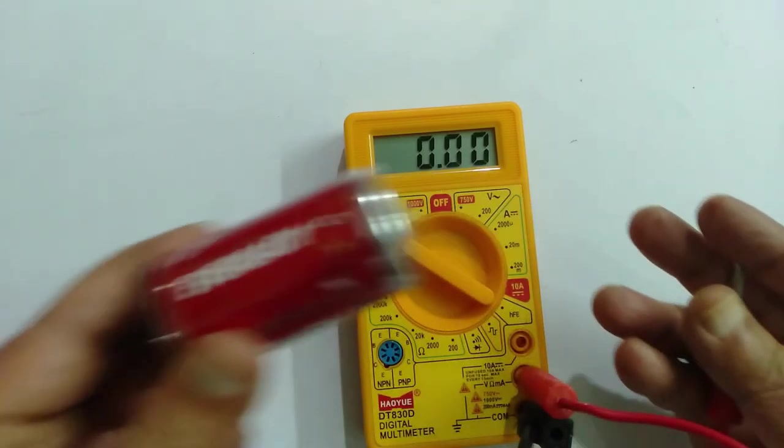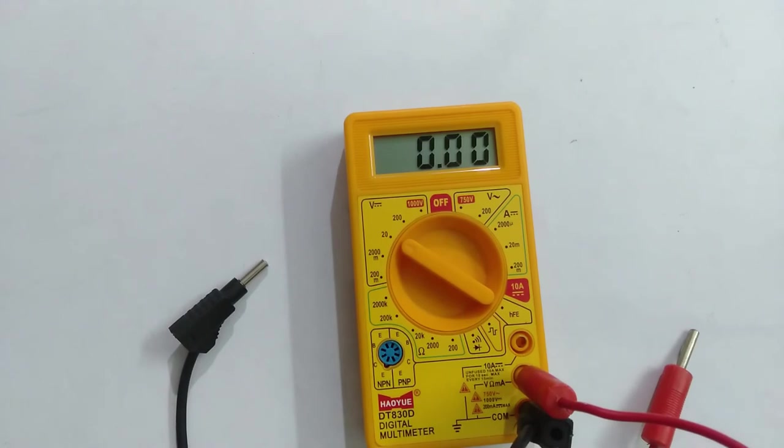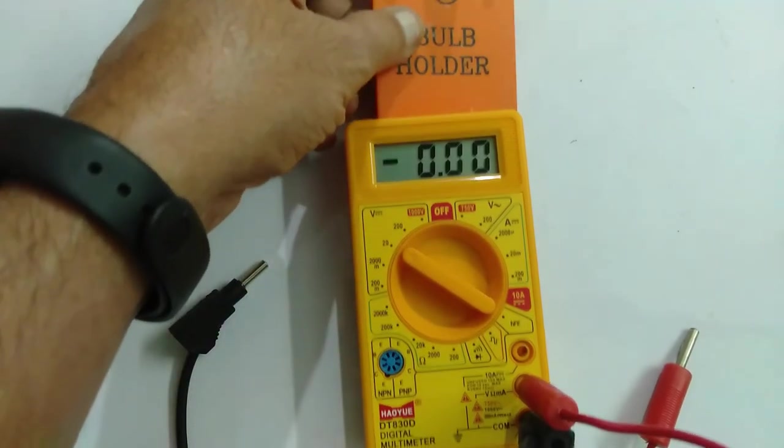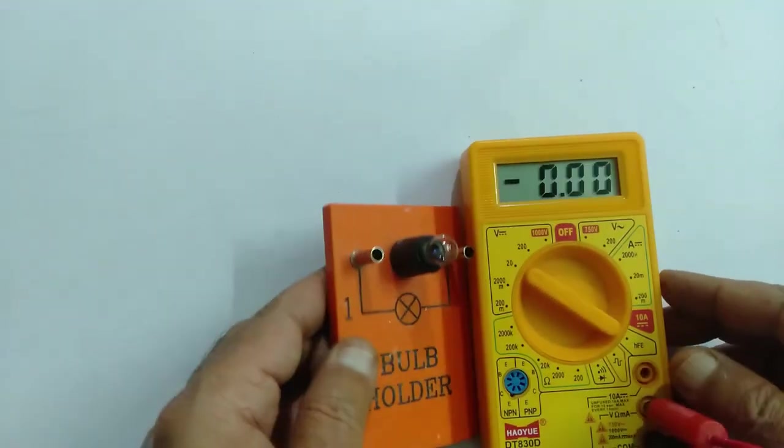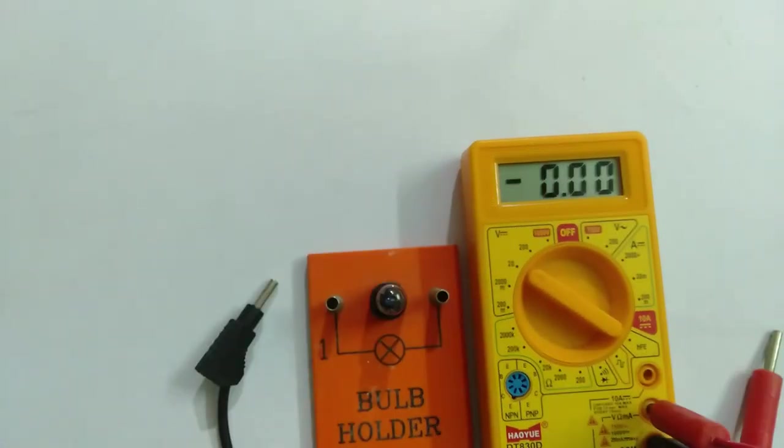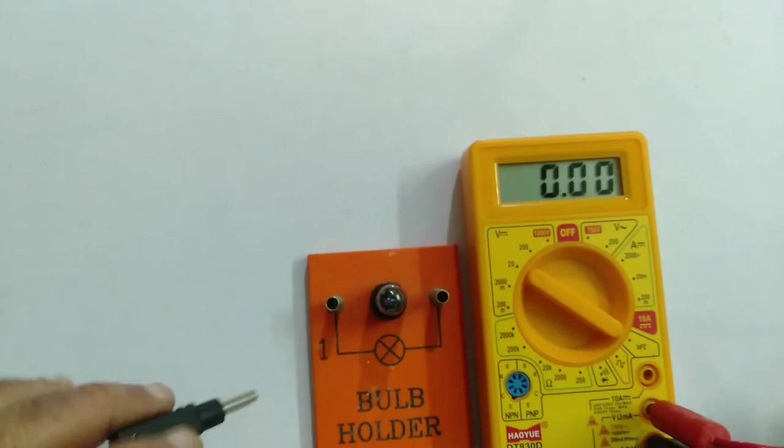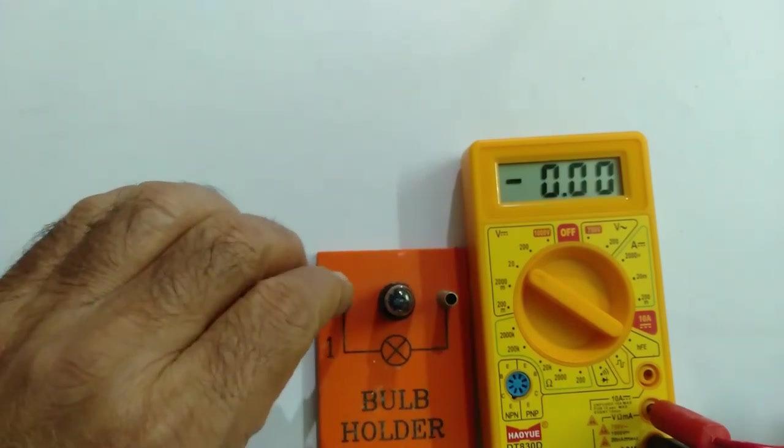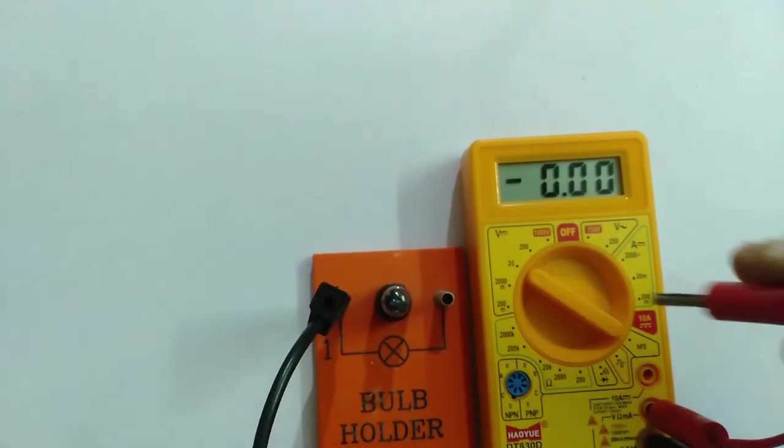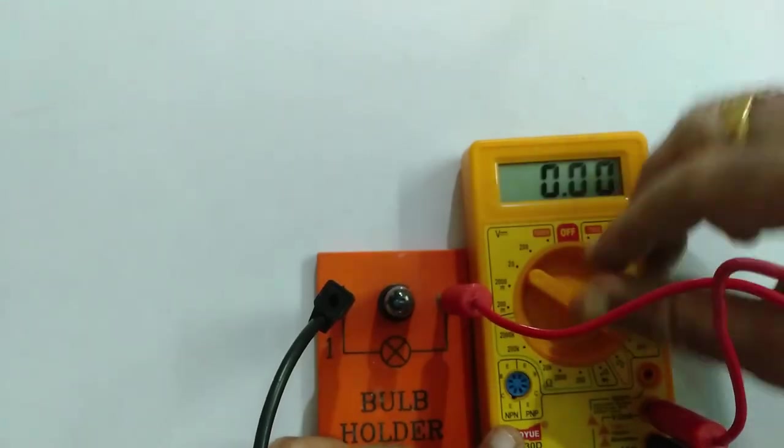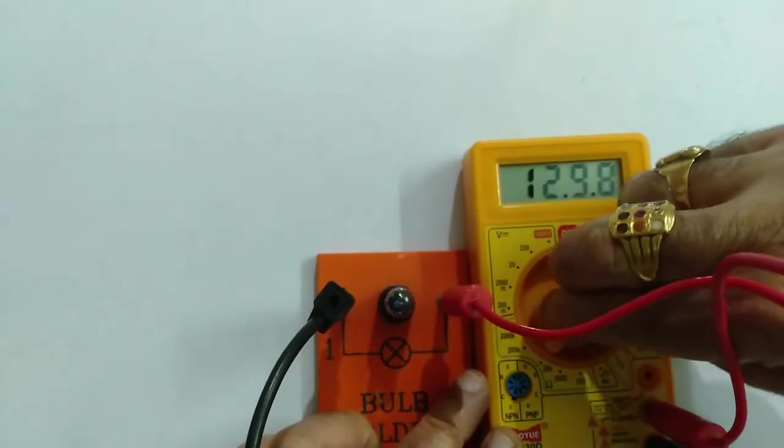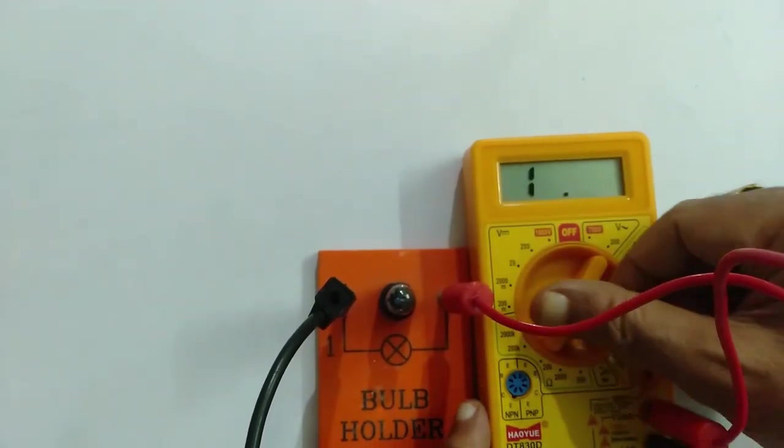Like that, you can measure the current in the circuit and at the same time resistance of anything. Suppose if I want to measure the resistance of this bulb. For resistance, there is no positive or negative. If I connect at one end, the second end at this one, I have to keep it in the resistance section.